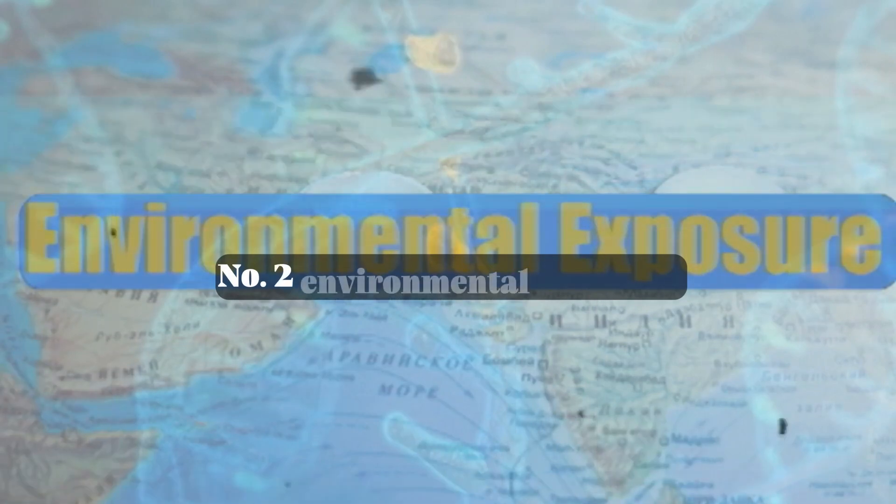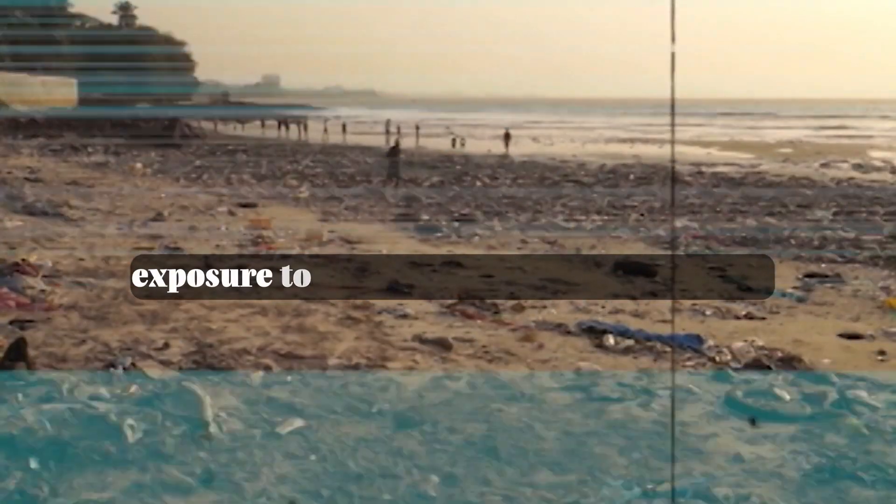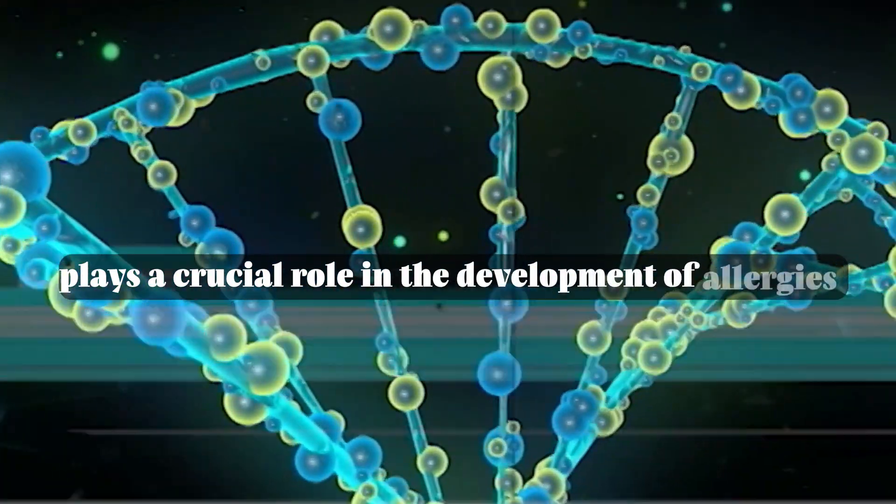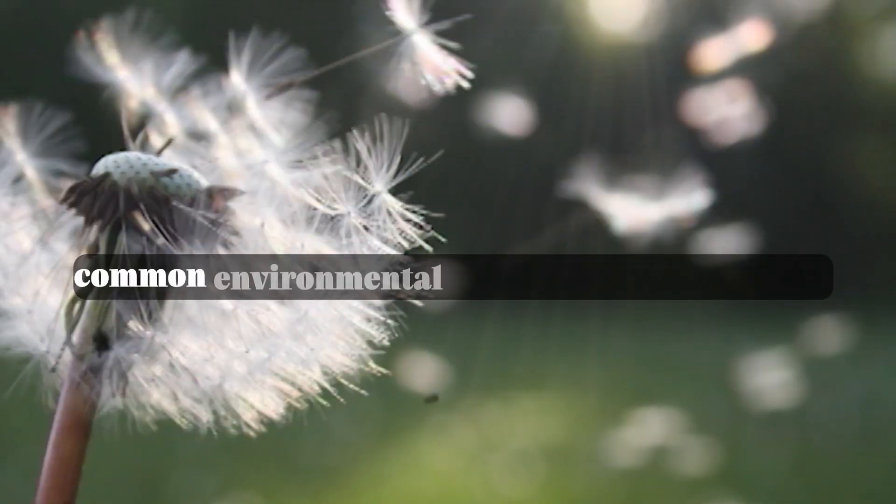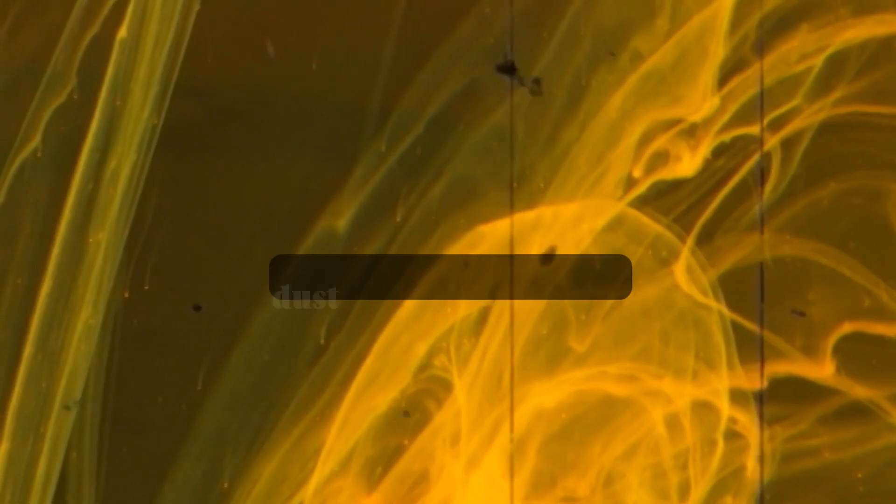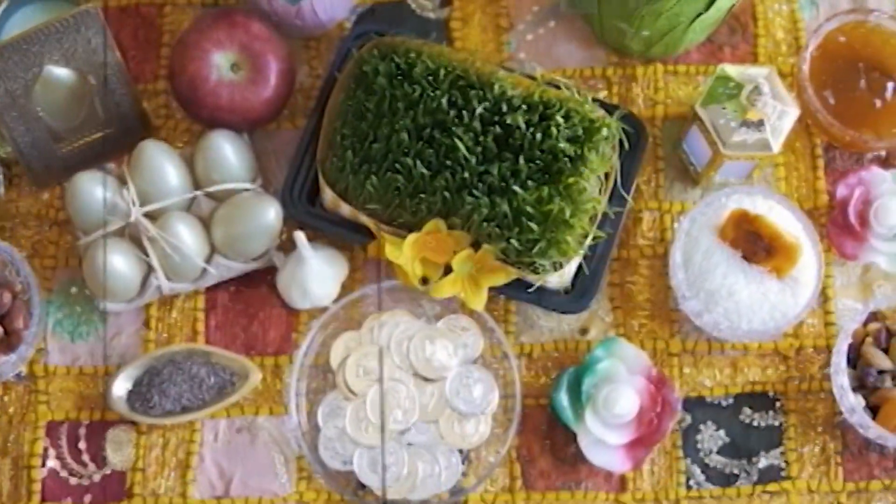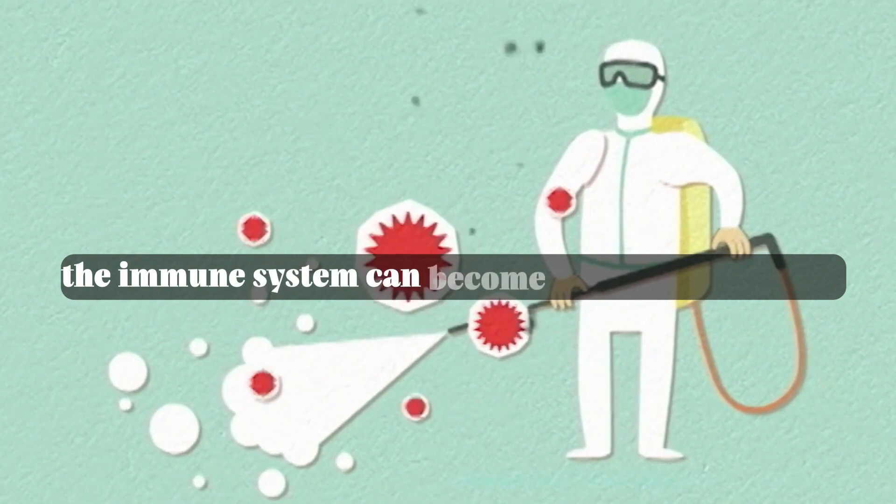Number two: environmental exposure. Exposure to allergens in the environment plays a crucial role in the development of allergies. Common environmental allergens include pollen, dust mites, mold spores, pet dander, and certain foods. The immune system can become sensitized to these allergens when exposed to them, leading to allergic reactions upon subsequent exposure.